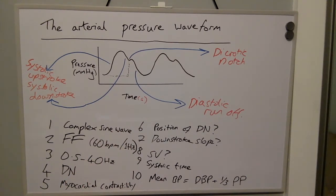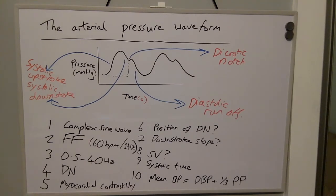The arterial pressure waveform is a complex sine wave that is the summation of a series of simple sine waves of different amplitudes and frequencies. The fundamental frequency is equal to the heart rate, so this is equal to 60 beats per minute or 1 Hertz.